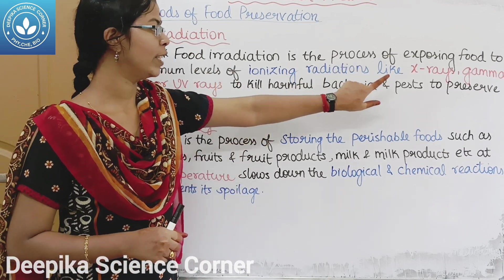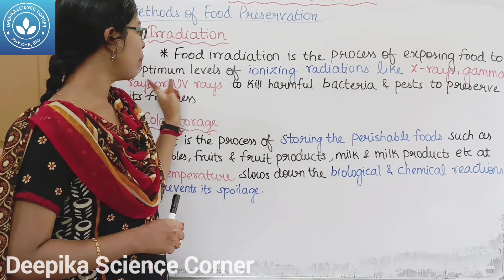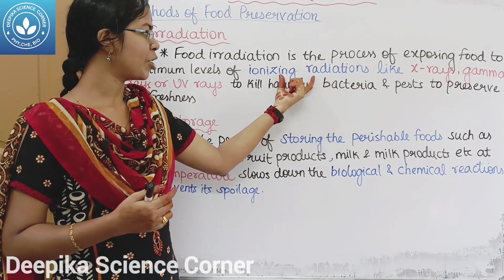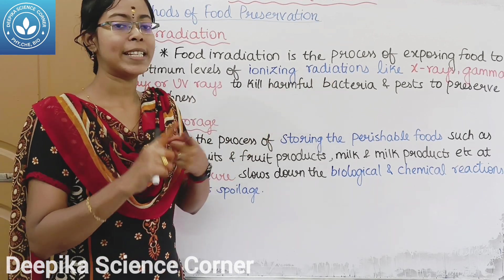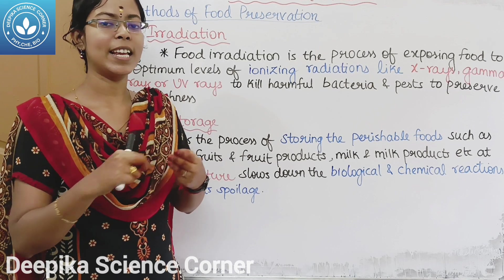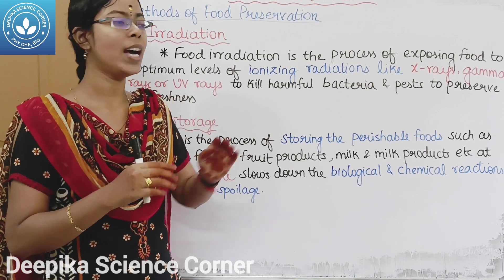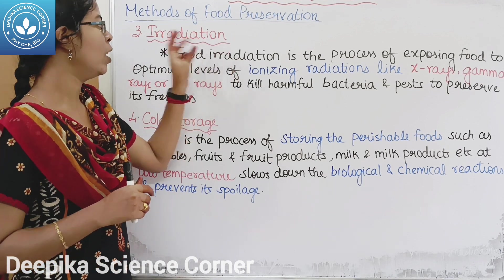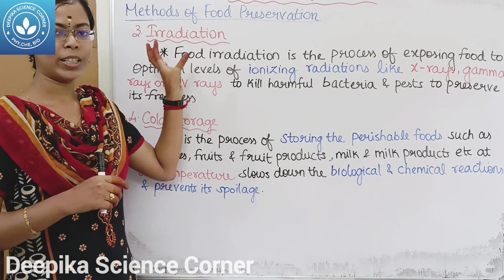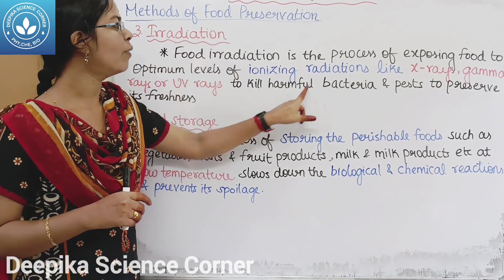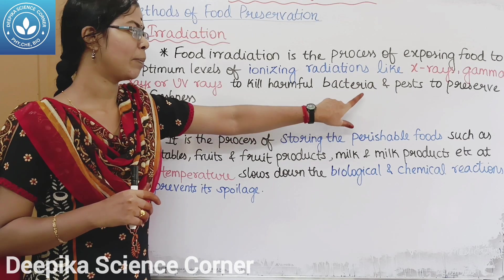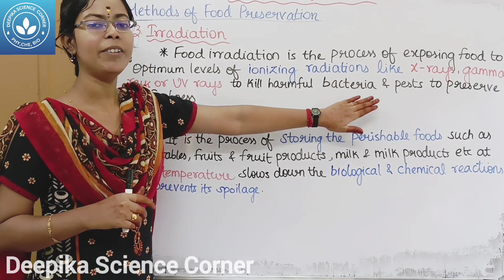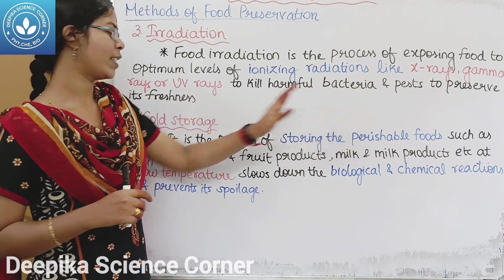The third method is irradiation. Food is exposed to an optimum level of ionizing radiation such as X-rays, gamma rays, and UV rays to kill the harmful bacteria and pests in order to preserve the freshness of the food.